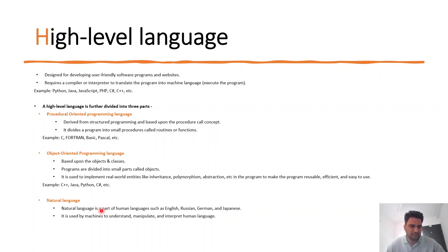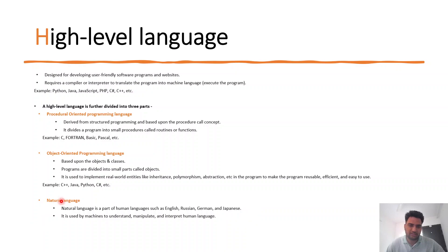Natural languages are all human spoken languages — like Hindi, English, German, Russian, Japanese, Chinese. These are languages that humans speak. Today you can see their use in mobile voice assistants where we give instructions verbally, such as making a call. Natural languages are also used in AI.